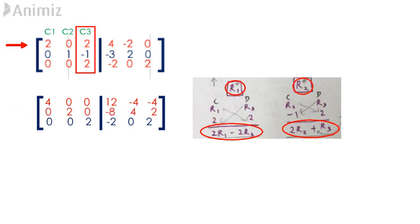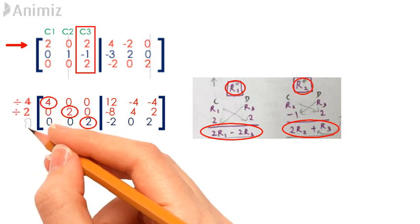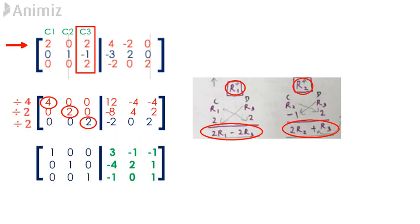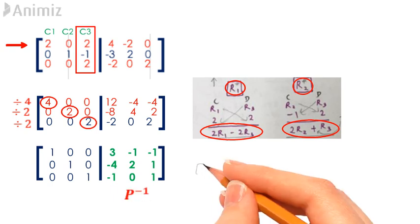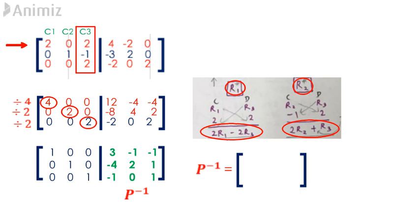For the fourth and final step, we refer to the matrix diagonal. With reference to the diagonal of the left-hand side of the augmented system, we divide each row by its diagonal element to create an identity matrix on the left. Row 1 is divided by 4, row 2 is divided by 2, and row 3 is divided by 3. The matrix obtained on the right-hand side is the inverse of matrix P. Therefore, P inverse equals 3, -1, -1, -4, 2, 1, -1, 0, 1.